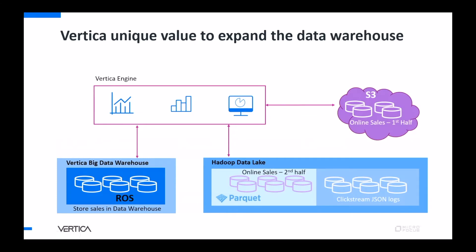Here is the architecture for the use case. At the center is the Vertica engine, accessing data from its native ROS format for store sales in the data warehouse. There is also the Hadoop Lake with Parquet data and clickstream logs containing customer click and session information. The same online sales data is also stored in AWS S3, which is cheaper storage. Now let's jump into the demo.